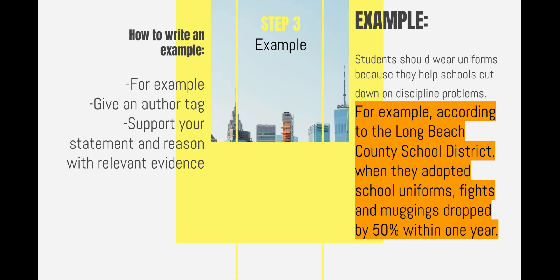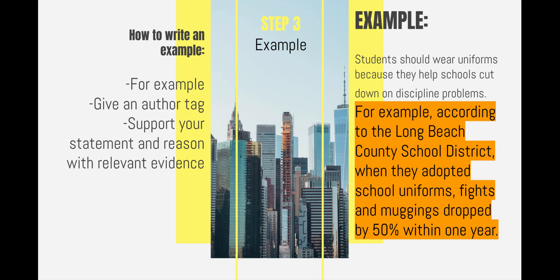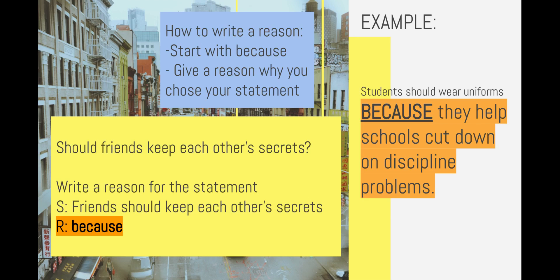Moving on to the example — this is step three in the SREE. This will also be your second sentence, because the statement and the reason combined together only make one sentence. That's to give you a really strong first sentence. You don't really want to start sentences with 'because,' so the statement and the reason together are one sentence. Your example will be your second sentence, but it is the third part of an SREE.